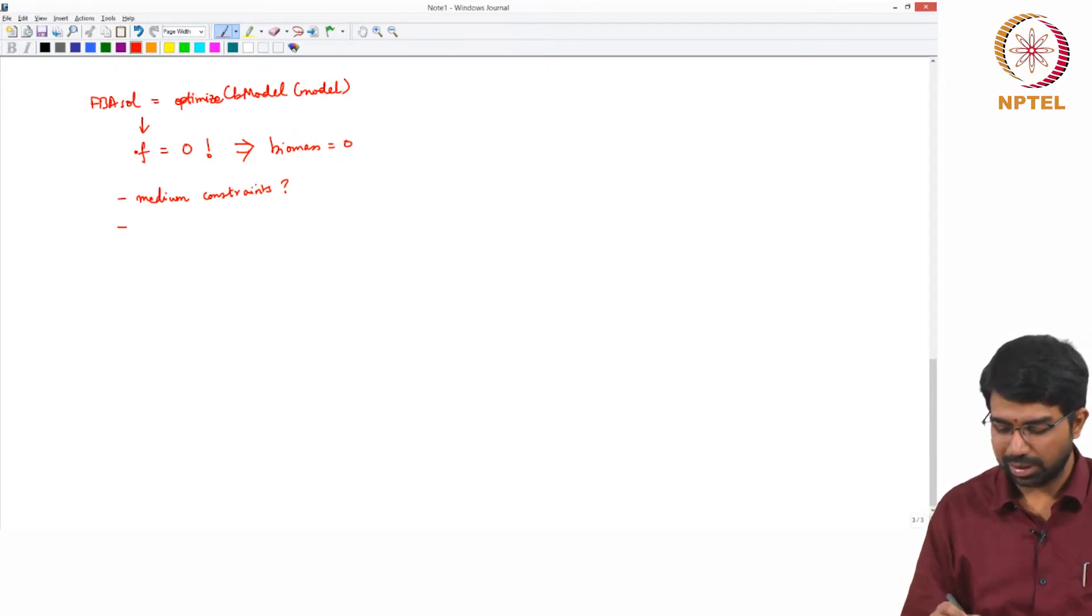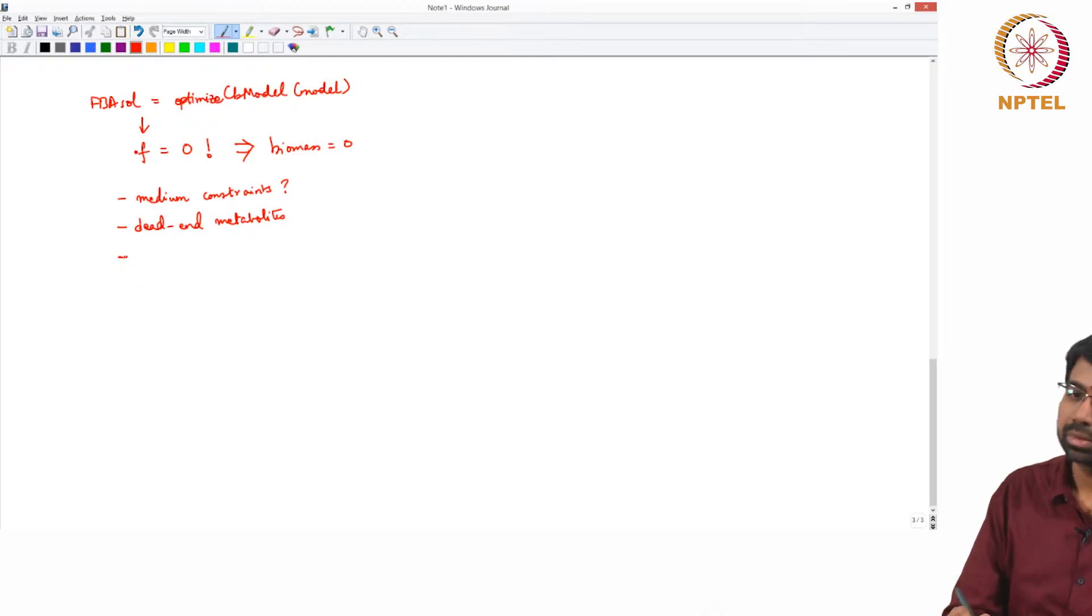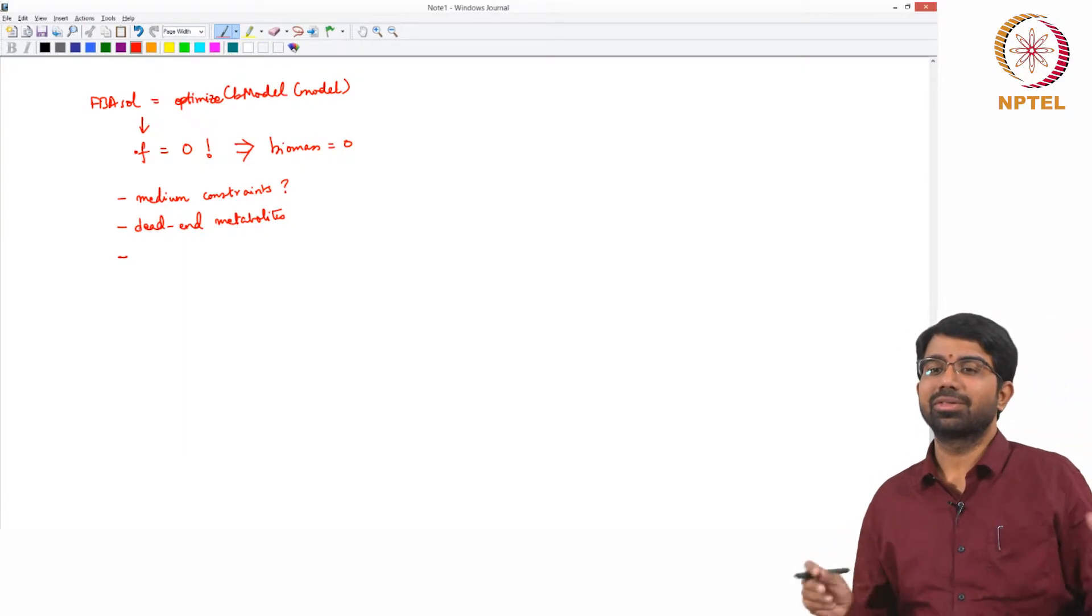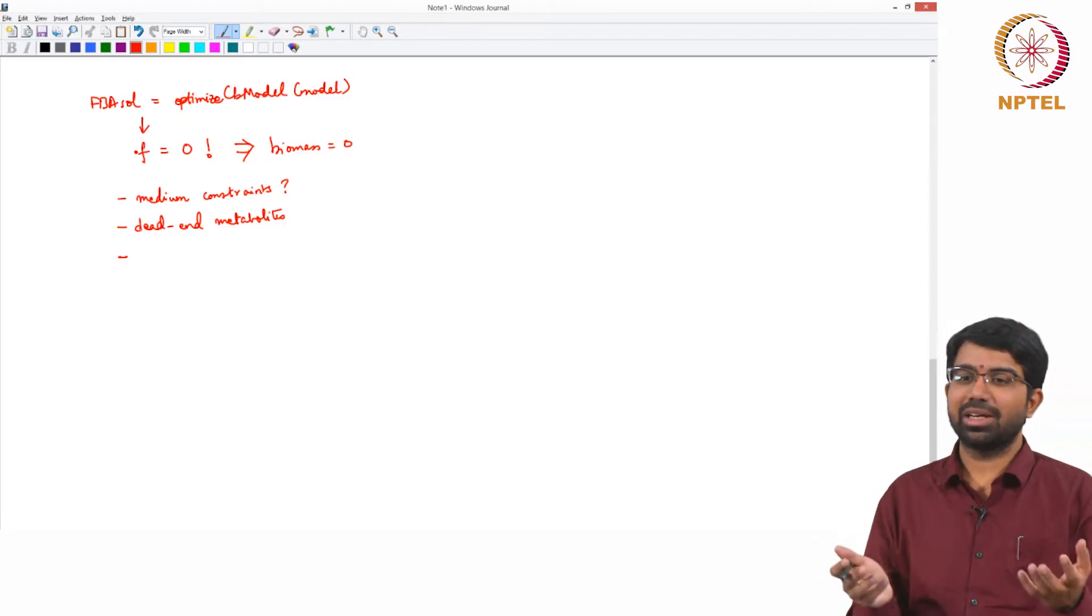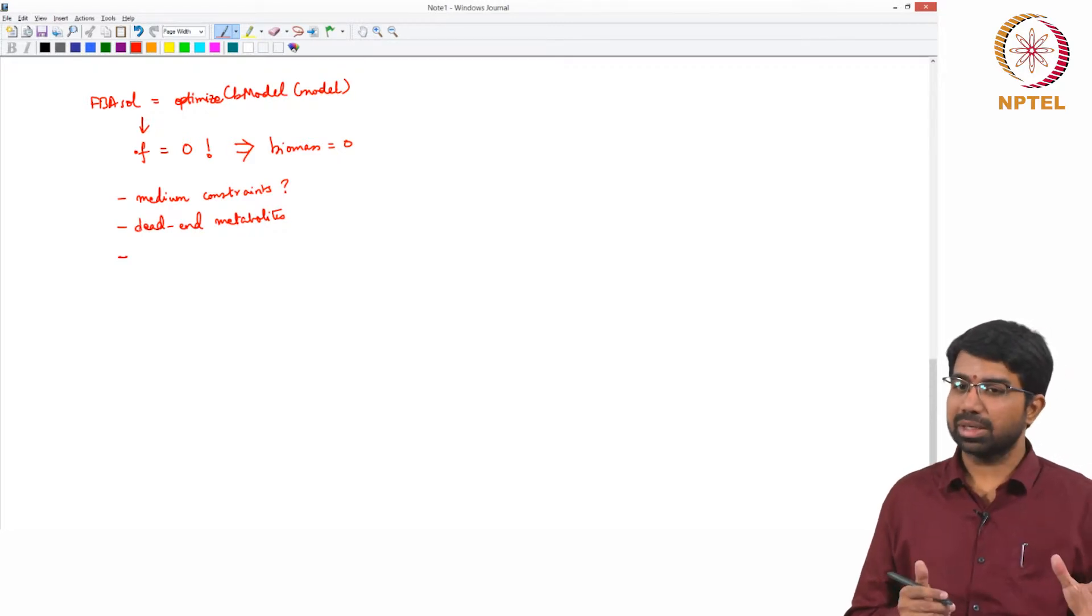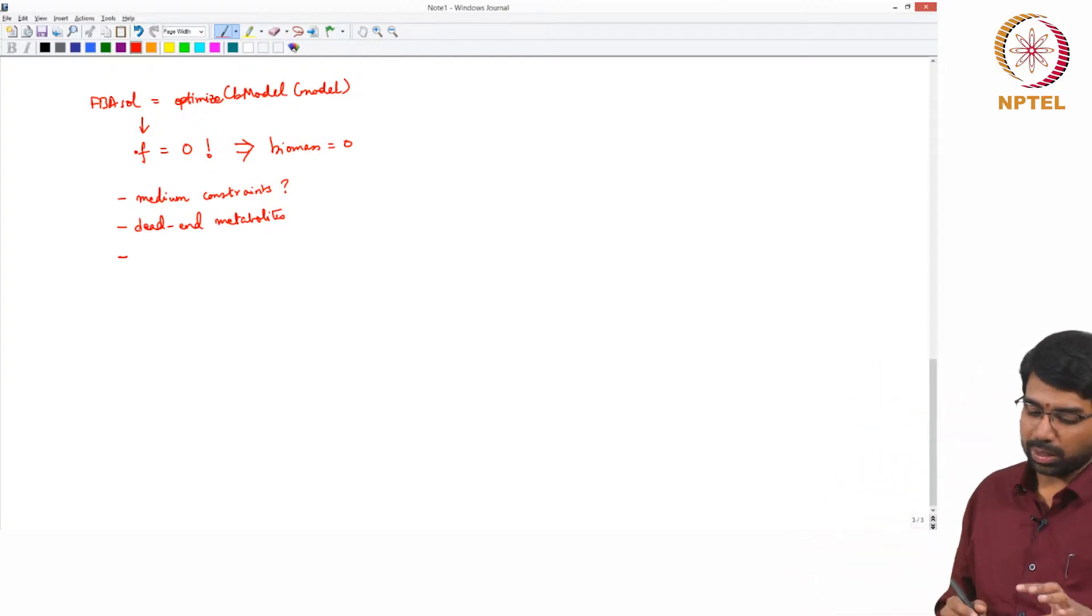So the other issue could be that what we just discussed, we could have dead end metabolites spoiling the show. Or blocked reactions - blocked reactions are unnecessary baggage, they exist, they do not carry a flux but they do not affect your simulation as such. There may be mistakes in the model or gaps in the model. But for now why would we have zero flux? It could be because your medium constraints are wrong or maybe there are some dead end metabolites in the model which do not have a source or sink.